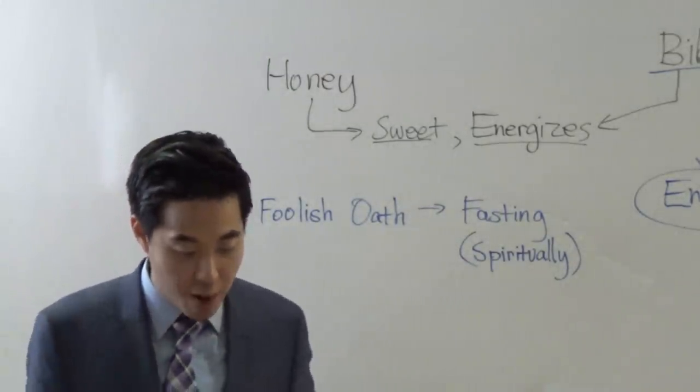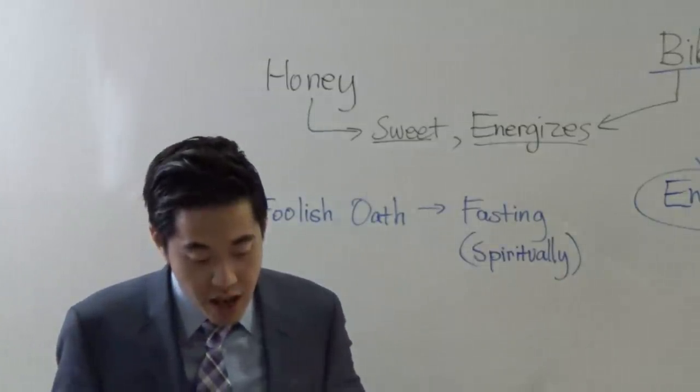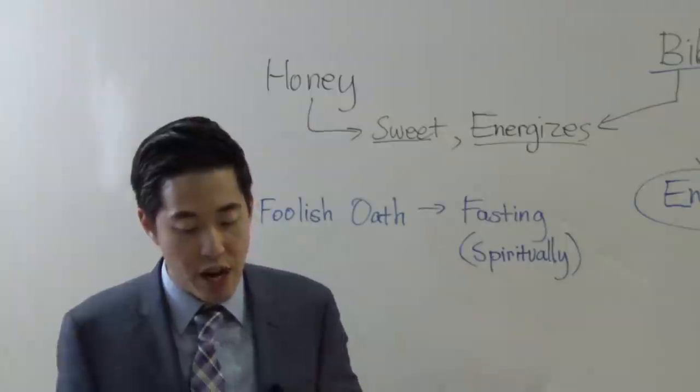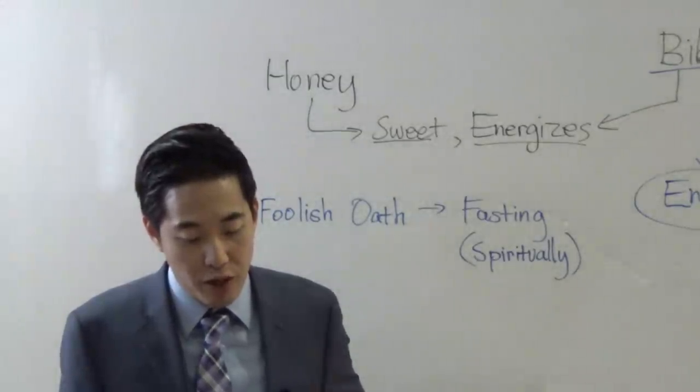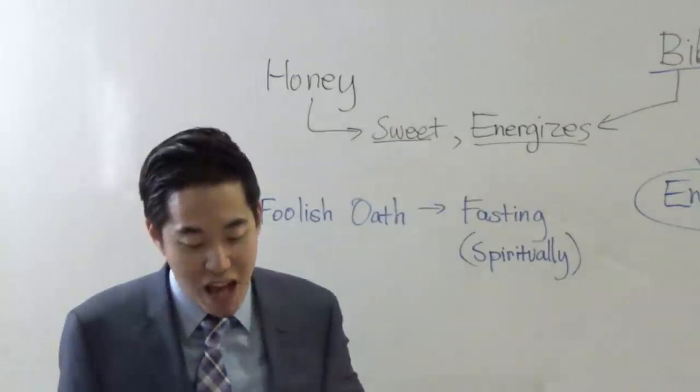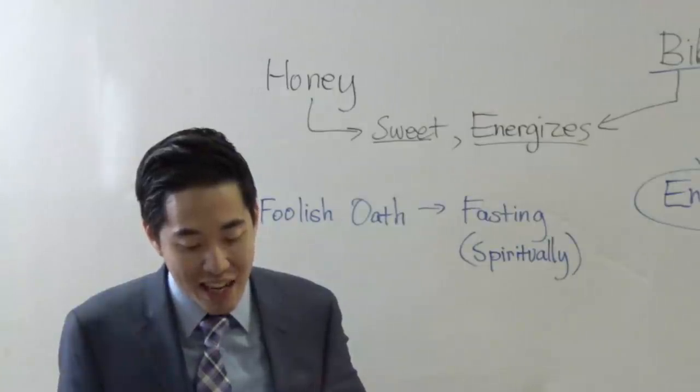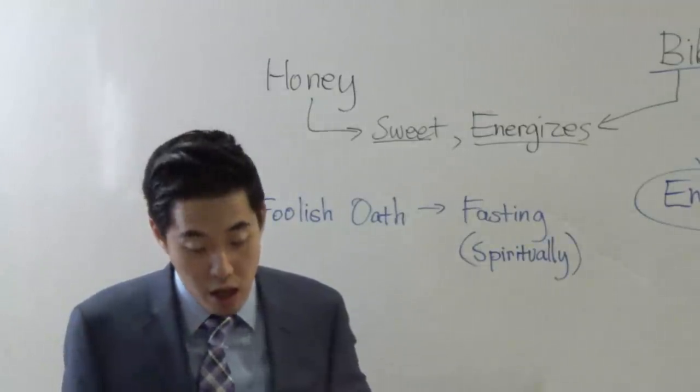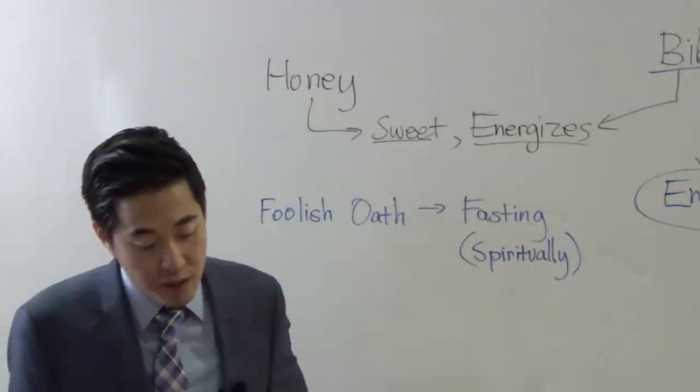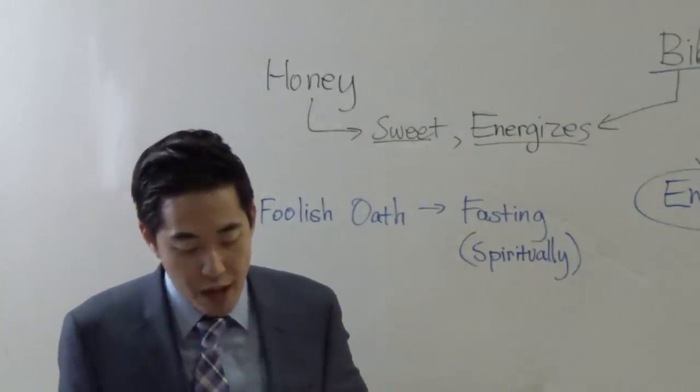Now look at Revelation, chapter 10. We're going to read verse 9. And I went unto the angel and said unto him, Give me the little book. And he said unto me, Take it and eat it up, and it shall make thy belly bitter, but it shall be in thy mouth sweet as honey. See that? And I took the little book out of the angel's hand and ate it up, and it was in my mouth sweet as honey. And as soon as I had eaten it, my belly was bitter.